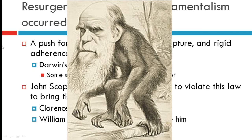Speaking of divisions, consider this cartoon about Darwin and dividing opinions. Go ahead and apply HIP — Historical context, Intended audience, Purpose, and Point of view.